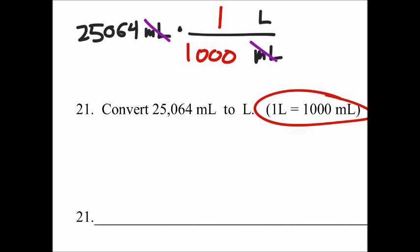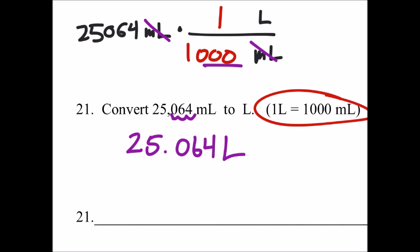So again, this tells us we're just going to move the decimal place three times because of the three zeros there. So we get 25.064 liters.